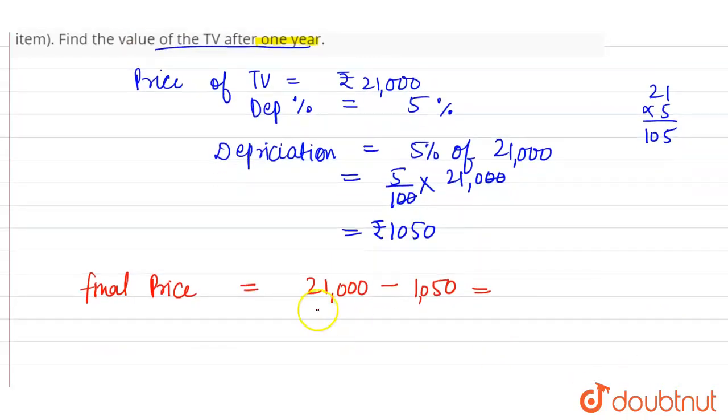After calculating depreciation, this equals 19,050 rupees. This is the price of the TV after one year.